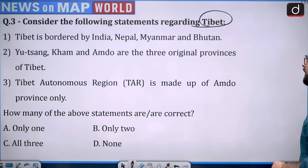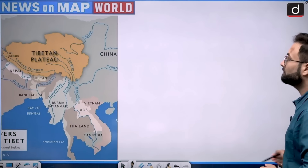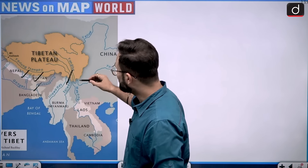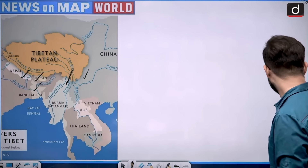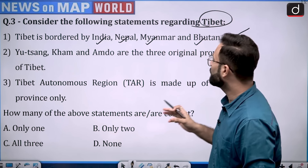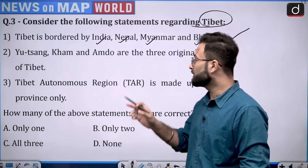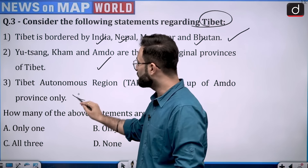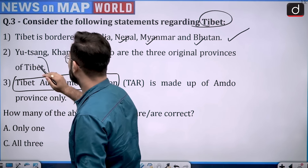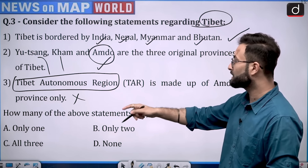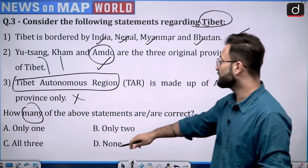Coming to statement one about the areas bordering Tibet — the Tibetan plateau is bordered by Nepal, Bhutan, India, Myanmar, and China. So Tibet is bordered by India, Nepal, Myanmar and Bhutan — that is correct. Statement two — Ü-Tsang, Kham and Amdo are the three original provinces of Tibet — that is also true. Statement three — Tibet Autonomous Region (TAR) is made up of Amdo province only — this is incorrect, because the Tibet Autonomous Region is made up of Ü-Tsang and Kham, but Amdo is not part of TAR. So statements one and two are correct; option B is your right answer.